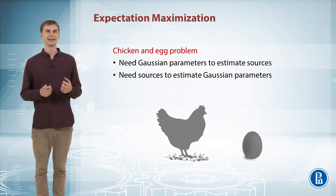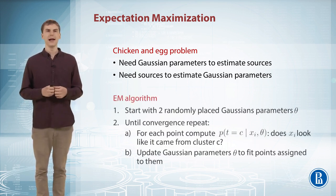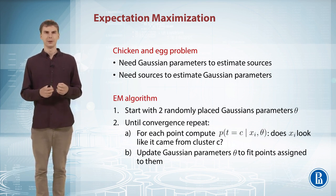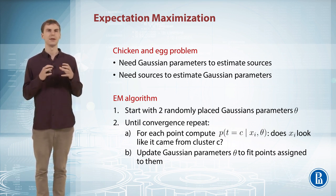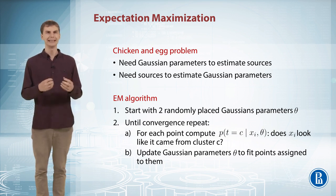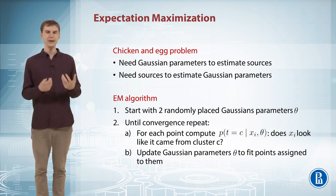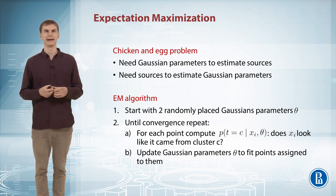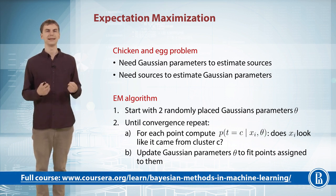The expectation maximization algorithm suggests a very natural solution. First, initialize the parameters randomly. Then, in iterations, repeat two steps until convergence: first, fix the parameters, assume they are the true ones, and estimate the sources; second, use the sources to re-estimate the parameters — to update our beliefs about the parameters. After repeating these two steps long enough, we will hopefully obtain a reasonable solution to our probability distribution fitting problem and be able to fit the Gaussian mixture model to our data.